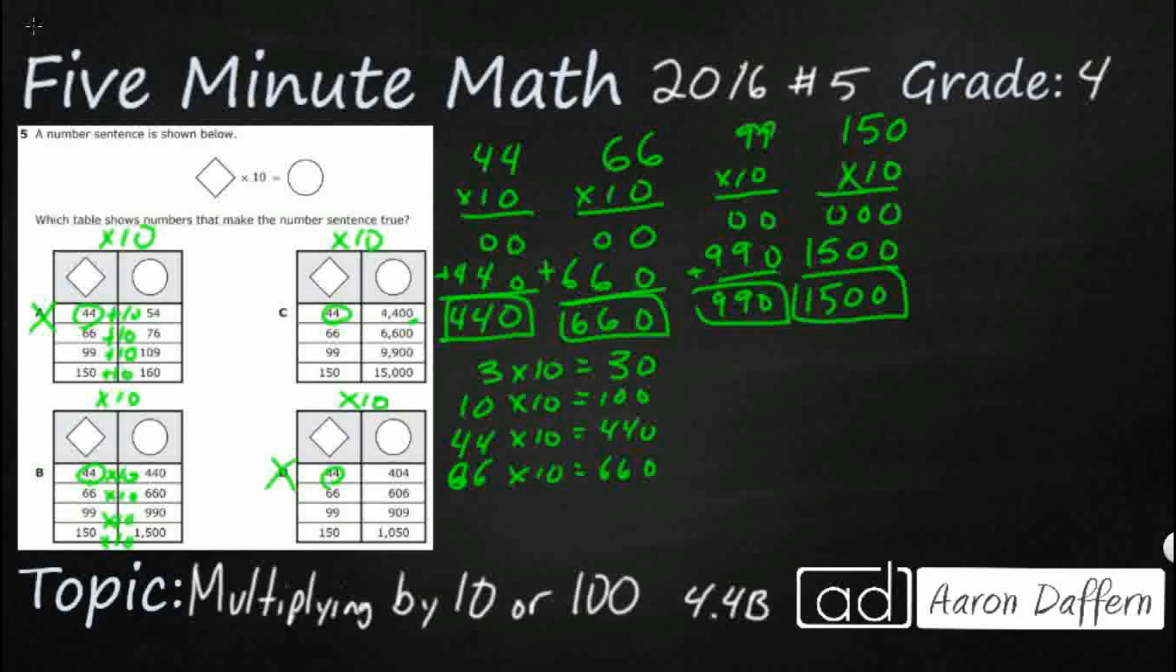When we multiply anything times 10, we just take our first factor and we add a zero. Look at that. Take our first factor three, add a zero. 10 times 10, take our first factor 10, add a zero. 44 times 10, take our first factor 44, add a zero. 66 times 10, take our first factor 66, add a zero. That's the trick.